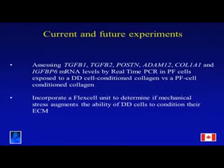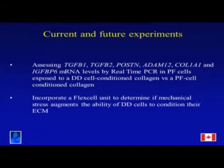For current and future experiments, the very next step is to see what genes are actually dysregulated in palmar fascia cells growing in a Dupuytren's disease-altered environment, as that can give us lots of information about what differentiation pathways these cells go through. We just started these studies, and then our real-time PCR machine went down for a month, so unfortunately I don't have data for you today, but we'll have some very soon.